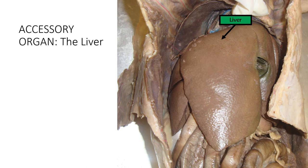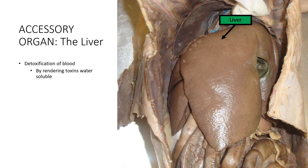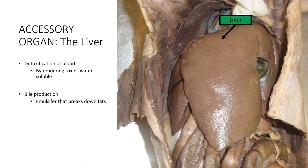Now we've covered the general digestive system; we're moving into the accessory organs, beginning with the liver. Functions of the liver include detoxification of blood by rendering toxins water soluble — toxins are lipid soluble and need to be dissolved in water to be expelled from the body. It also functions in bile production; bile is an emulsifier that performs emulsification, the breakdown of fats to increase surface area for enzymatic activity.